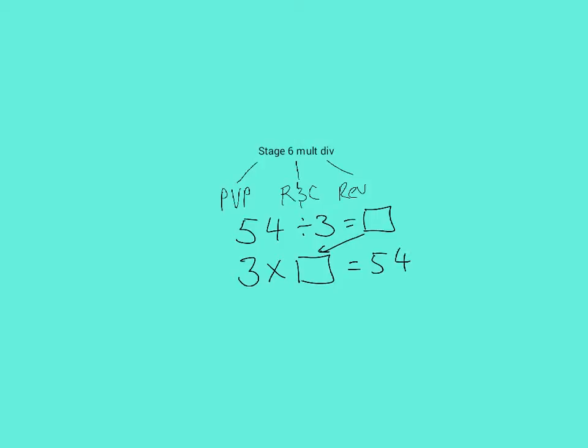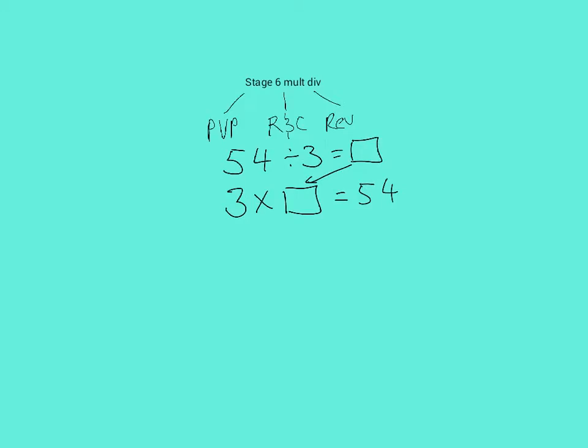From here, I'm going to use place value partitioning to solve it separately. And then I will use rounding and compensating. To use place value partitioning, remember I need to be multiplying the tens and the ones separately. So in this equation, 3 times what? Well, I'm going to start with 3 times 10 because that's a known fact to me. 3 times 10 is equal to 30.